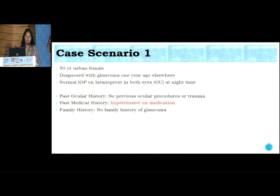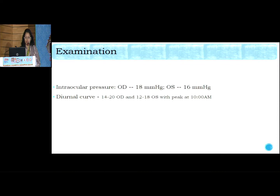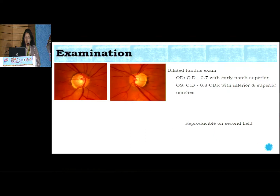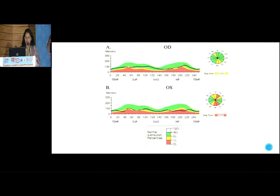There was no family history. Recently, she got an inferior arcuate scotoma and that is why she was referred to us for management. We checked the intraocular pressure — it was 18 and 16 with normal Dahlner curve. BCVA was also normal. She had open angles on gonioscopy. This was showing a classical glaucomatous defect with reproducible fields on second examination also.